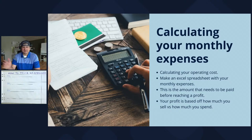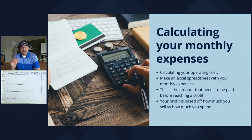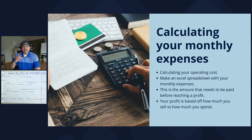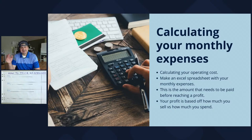The reason your pricing will differ from others is because your monthly expenses are different. It might cost me less to run my business than the person next to me. The best way — very old school — is to have an Excel spreadsheet and list all your expenses for the month. At the end of the month, look at your bank statement and write everything down. Most expenses should be the same from month to month.